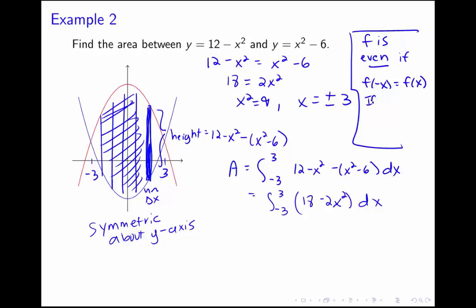In this case, when f is even, we have that the integral from negative a to a of f of x dx would be equal to twice the integral from 0 to a of f of x dx. So we can simplify some of the arithmetic we're going to have to do here by recognizing that this integral from negative 3 to 3 of this nice even function will be twice the integral from 0 to 3 of 18 minus 2x squared dx.